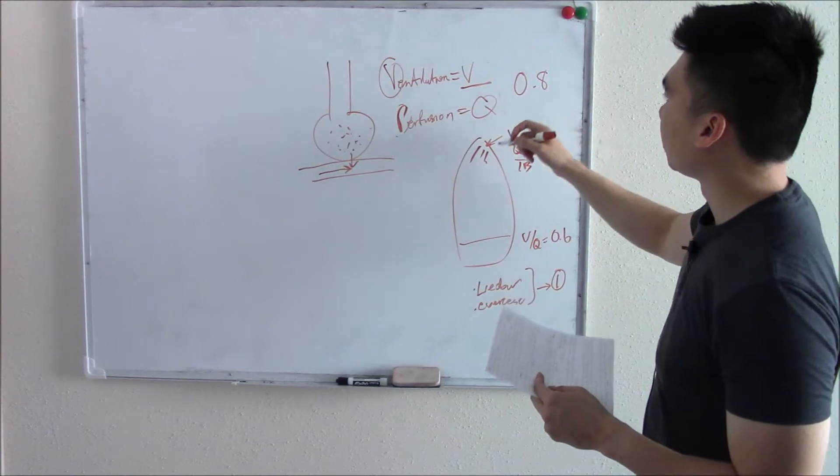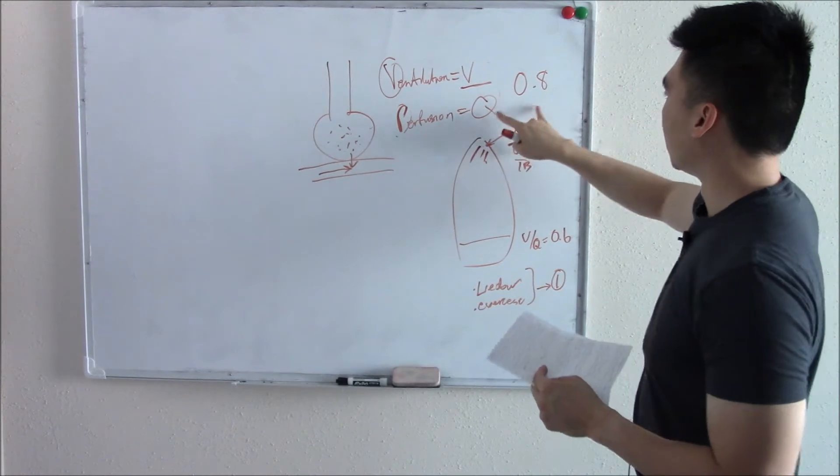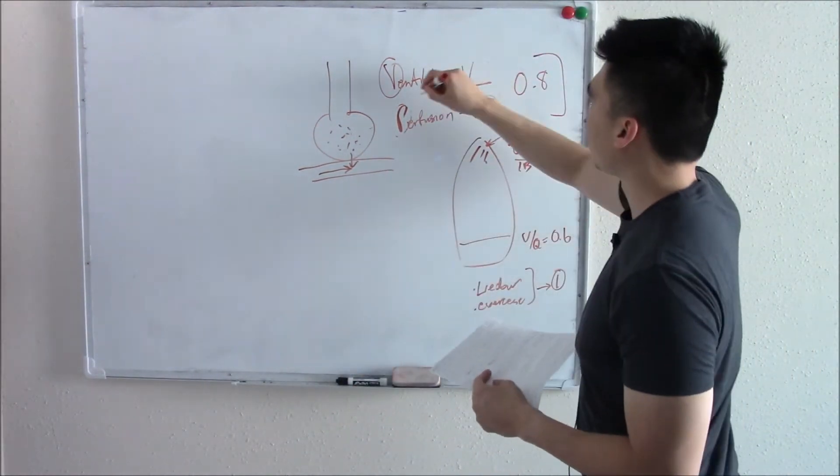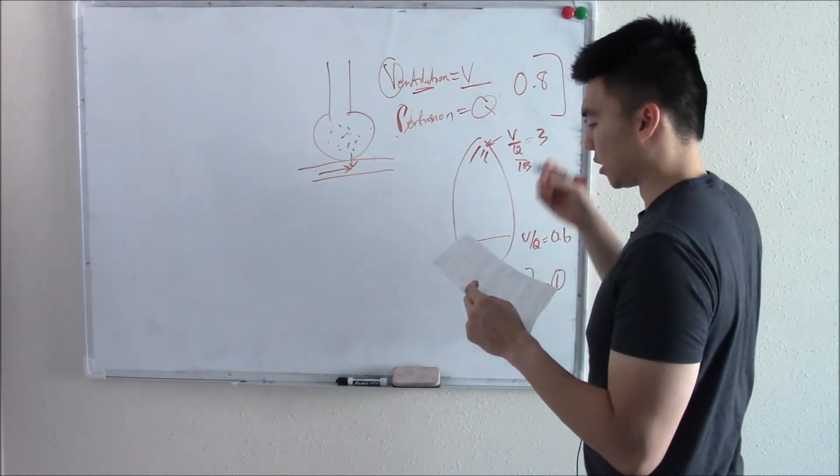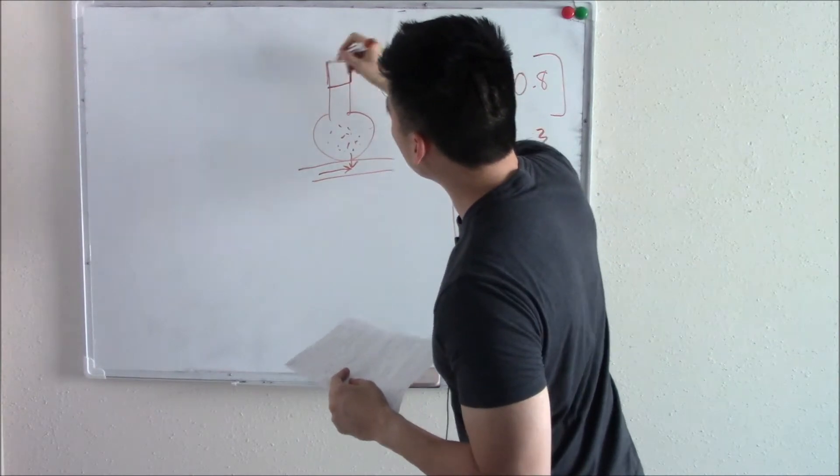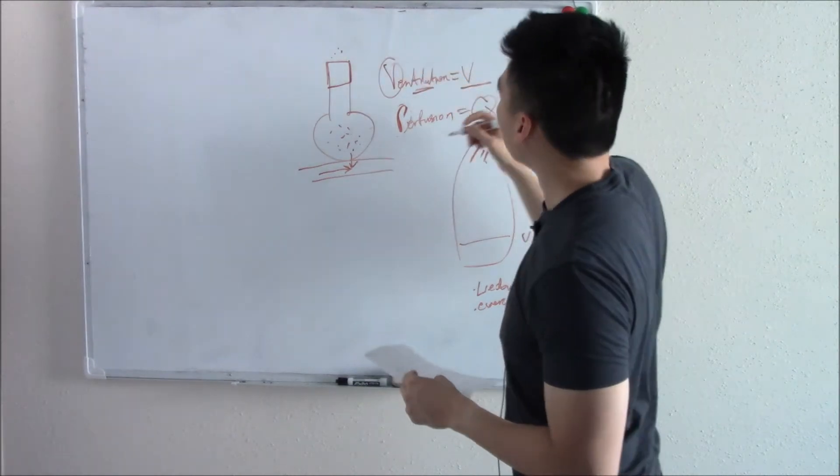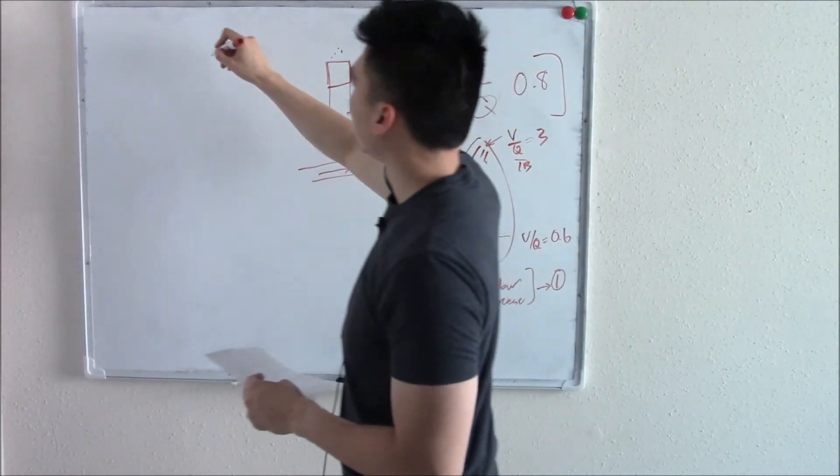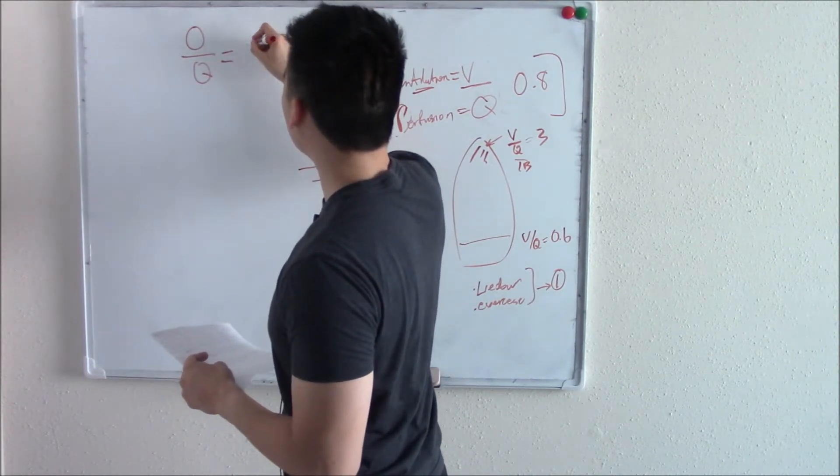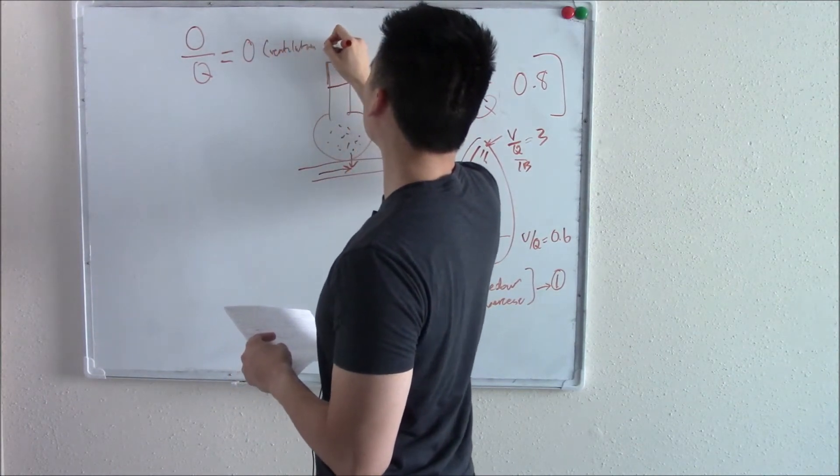Now what can happen if something goes wrong with our ventilation or perfusion? It will mess up this ratio and we'll know something's wrong. If we mess up our ventilation, let's go to the extreme. If we swallow like a Lego and we completely block our ventilation, and ventilation goes to 0, 0 over perfusion, then that makes 0. Ventilation problem. That's just math.